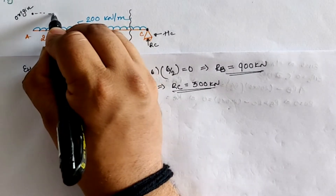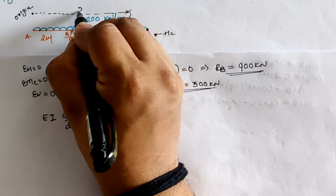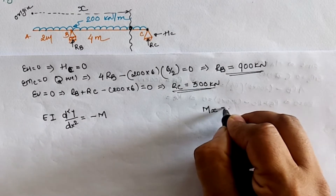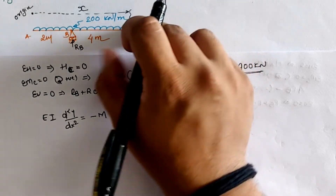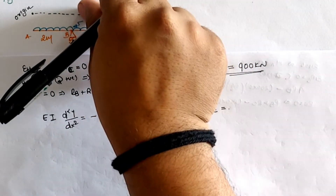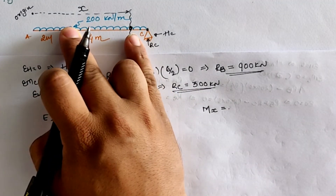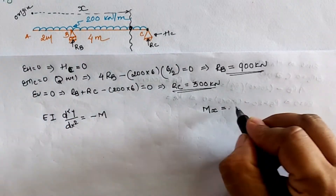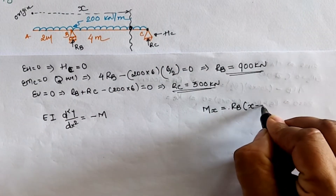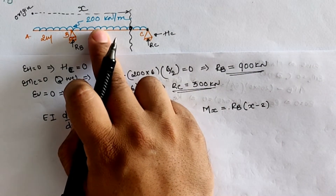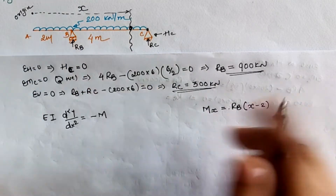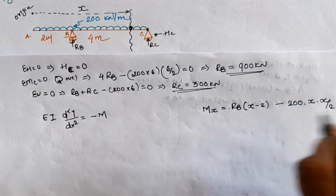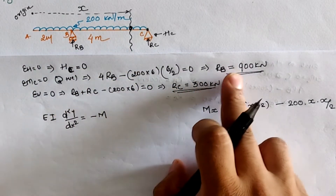With the section at distance x from the origin, the bending moment at this section Mx equals: RB creates a clockwise moment at distance (x − 2), so the term is +RB·(x − 2). The 200 kN/m UDL over x meters creates an anti-clockwise moment, giving −200·x·(x/2). Substituting RB = 900 kN and simplifying gives −100x².